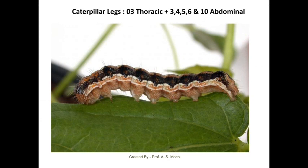According to the abdominal legs, larvae are classified into different categories. In the caterpillar, there are three pairs of thoracic legs and five pairs of abdominal legs. These five pairs of abdominal legs are present on the third, fourth, fifth, sixth, and tenth abdominal segments of the insect larva.